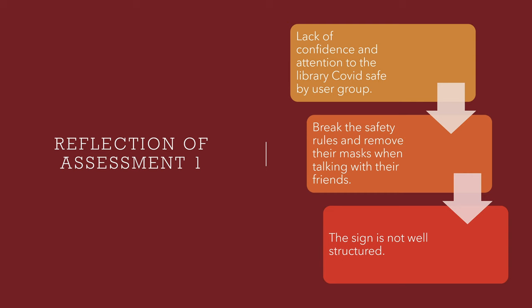Thus, my smart assistant has two main goals upon entering the library. The first one is to visualize the user's level of safety compliance. The second one is to help the user find an available seat.